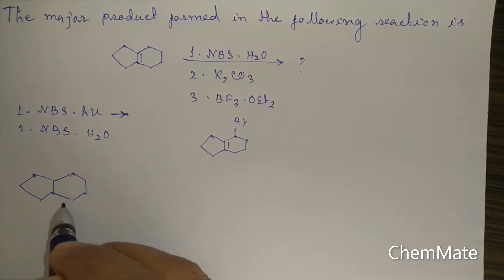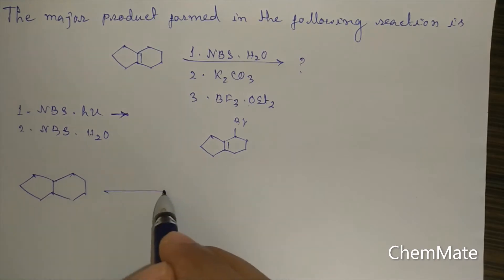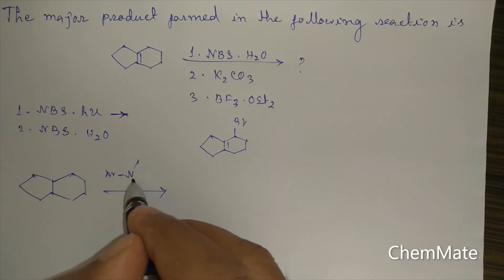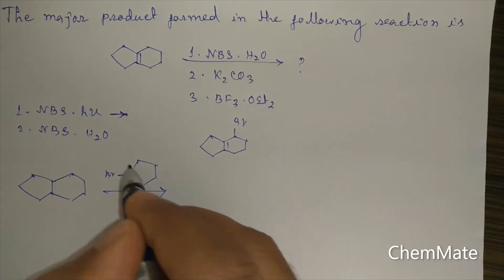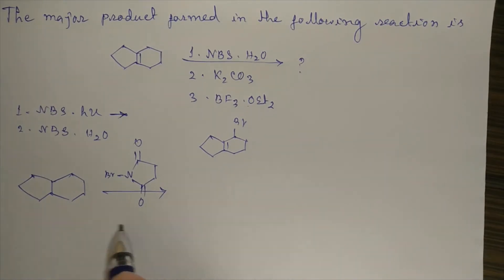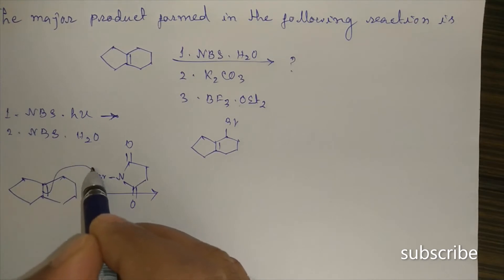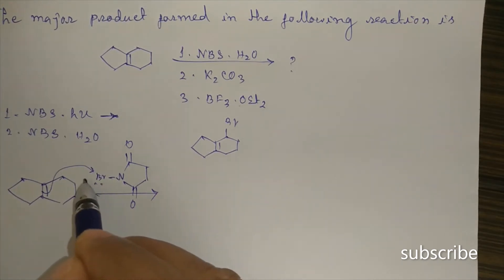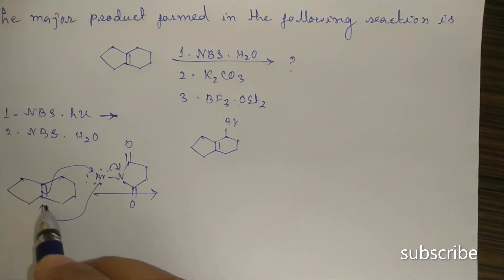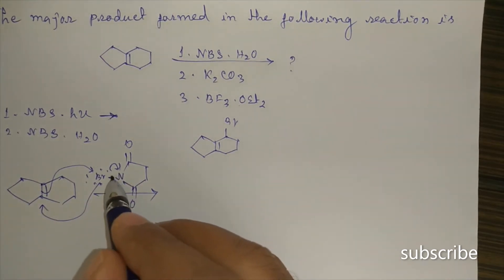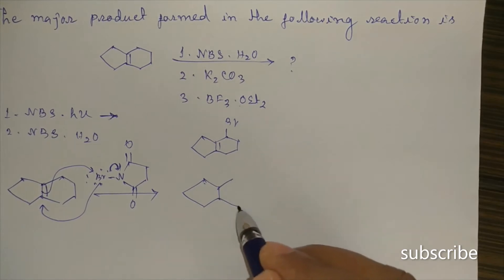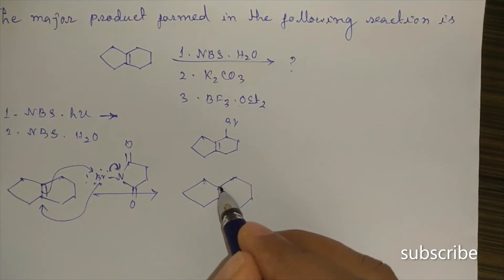First, a bromonium ion intermediate will be formed. N-bromosuccinimide provides the bromine electrophile. The double bond attacks the bromine, and the lone pair on bromine attacks the adjacent carbon, forming a cyclic bromonium ion intermediate.